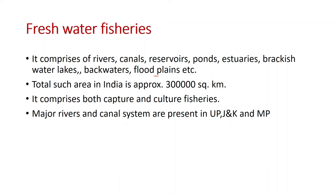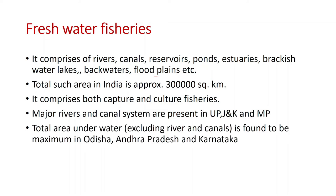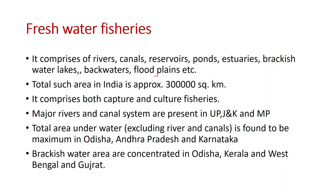Major river and canal systems are present in UP, J&K, and Madhya Pradesh — they have the maximum length of rivers and canals. Similarly, total area under water excluding rivers and canals is maximum in Odisha, Andhra Pradesh and Karnataka. Brackish water areas are mainly concentrated in Odisha, Kerala, West Bengal and Gujarat, though other states also have rivers, ponds and brackish water.